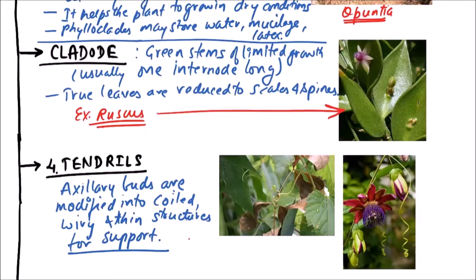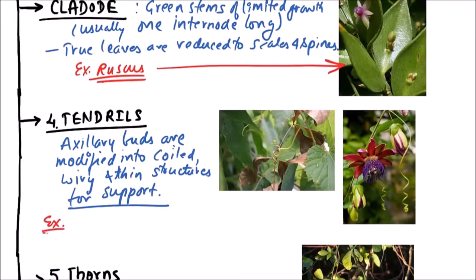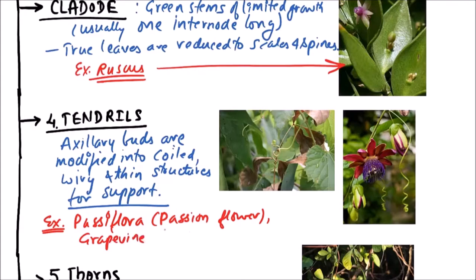Examples include Passiflora that is also known as passion flower, then grapevine Vitis, then Arachis hypogaea which is groundnut. So these all are examples of plants having tendrils. These are examples of plants in which the stem is modified into tendrils.